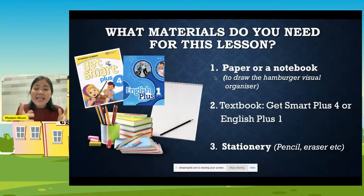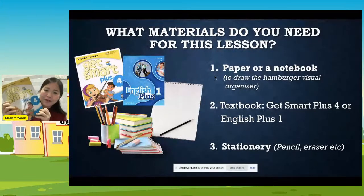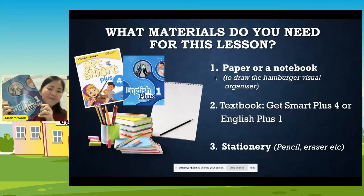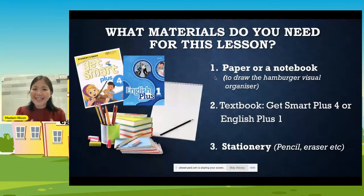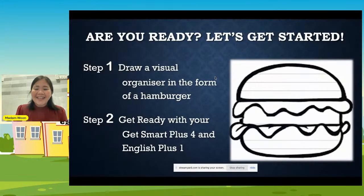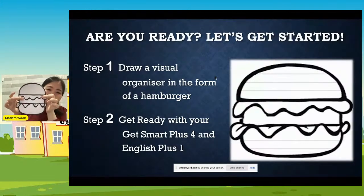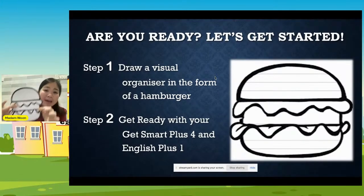The main thing for today is I need you to prepare a piece of paper or maybe a notebook. If you wish to prepare your Get Smart textbook, you may. Those who are from Year Five can prepare the English Plus One book — we are going to use this today. Now let's get started. The first thing I would like you to do is draw this visual organizer on a piece of paper — please make it big.